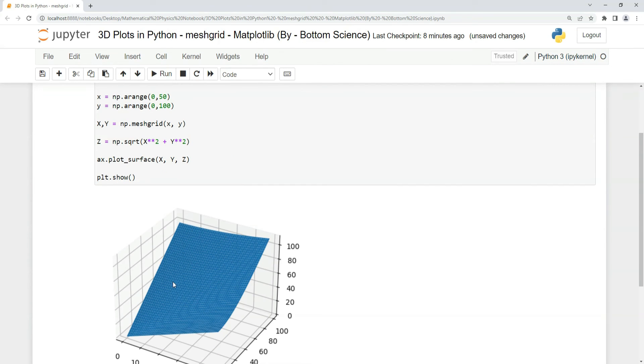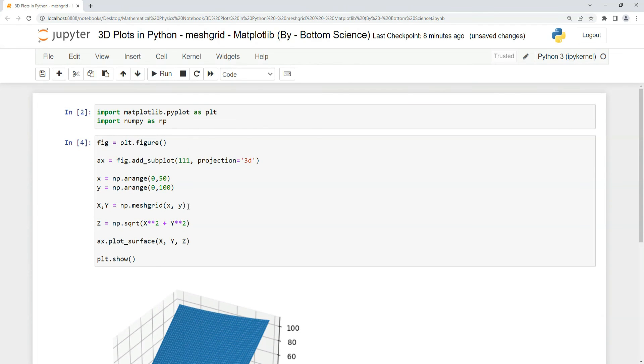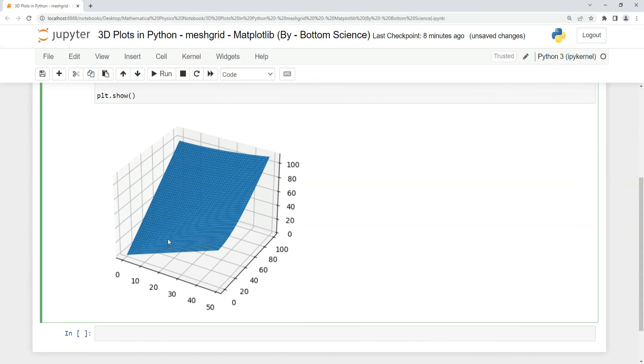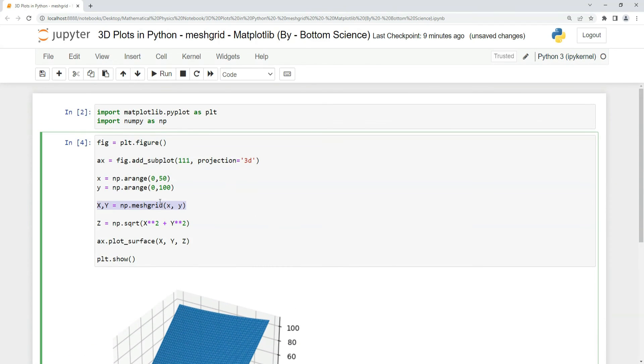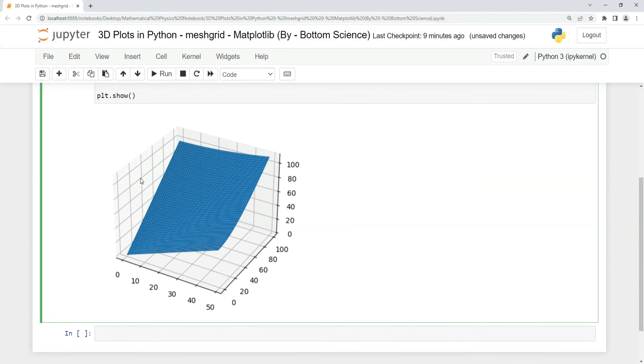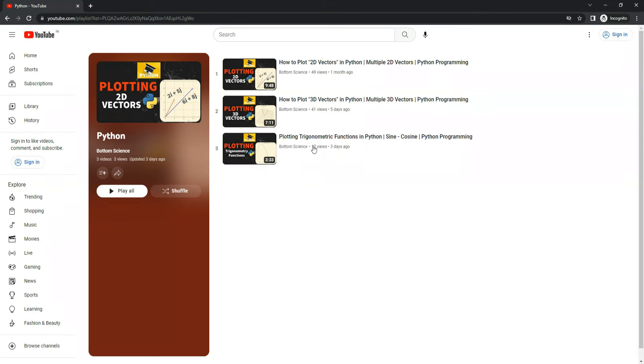As you can see, your 3D curve is drawn here—a 3D surface using the meshgrid function. You can see that grid points are available in your 3D plot. I hope you've understood this meshgrid function, which is very powerful. Another thing I want to add is this is our Python playlist.